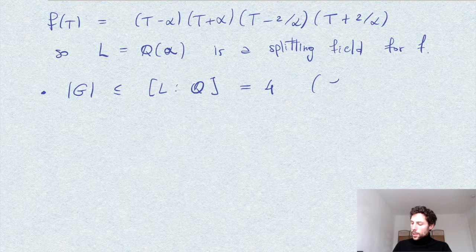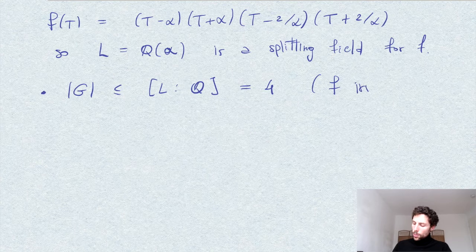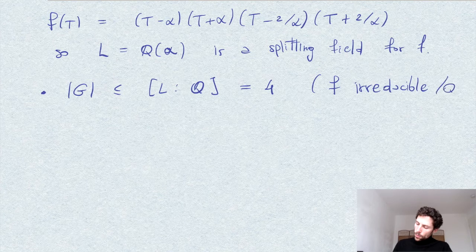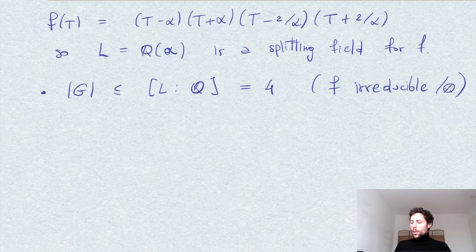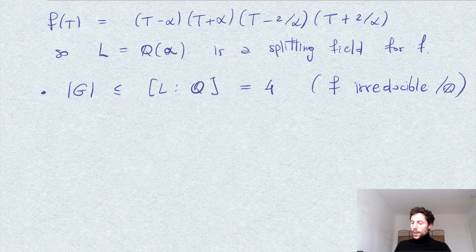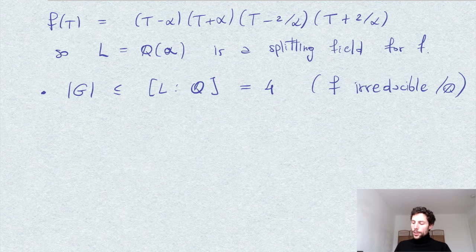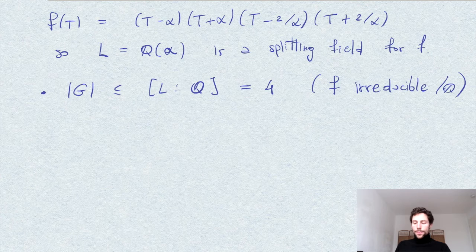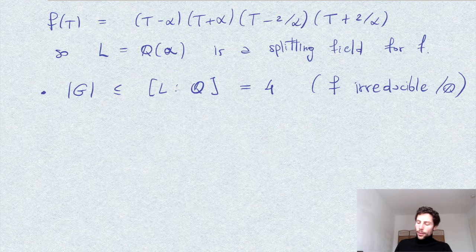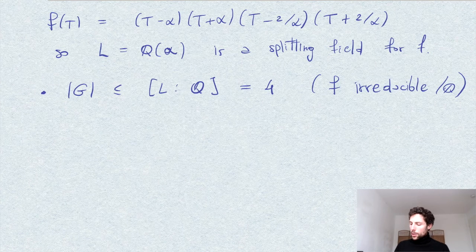You can also see that f is irreducible as a polynomial over Q by showing, for example, that it cannot split as a product of two quadratics. And obviously it cannot be otherwise since the roots are not in Q.